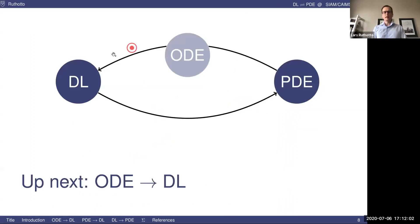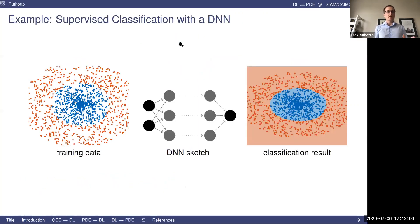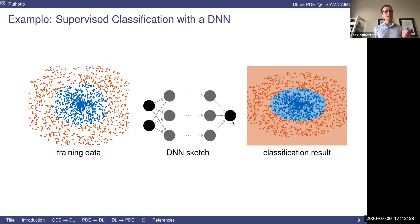Let's start with making the connection between ODEs and deep learning by walking through a simple yet interesting example. What you see on the left are some training points in 2D labeled in two classes: red and blue. The goal is to train a DNN that takes two inputs and gives one output — the probability of a point being blue. You can use this mapping to label all the points in the 2D plane, and you can see the function is consistent with the data and also generalizes beyond the data.